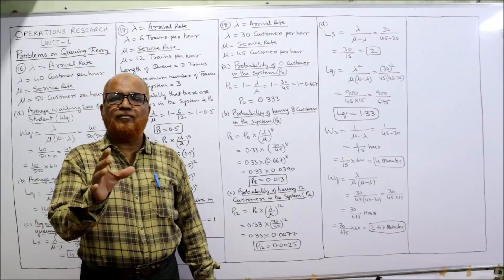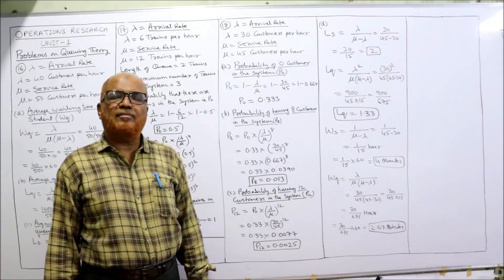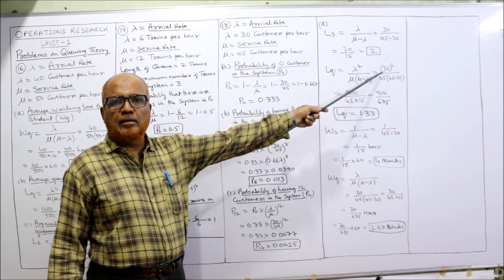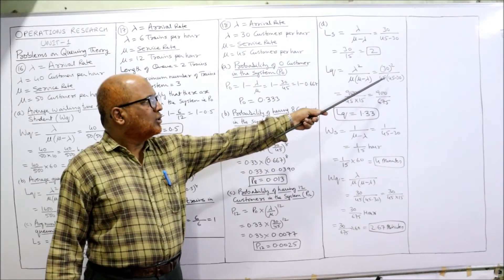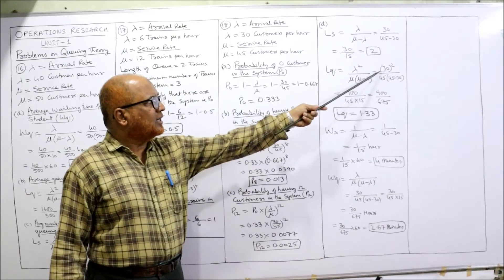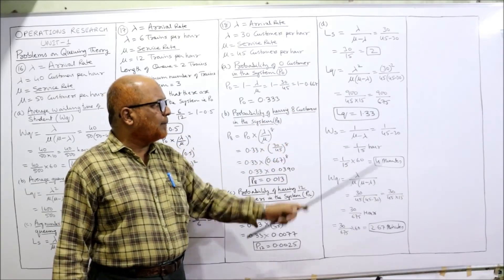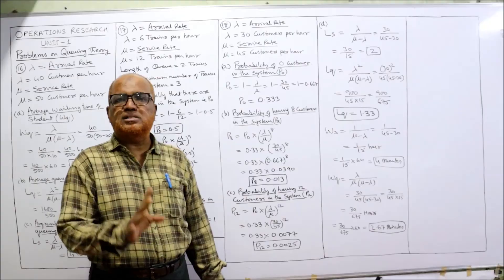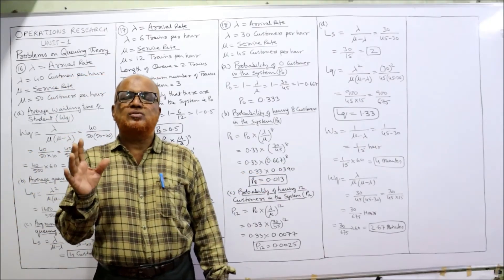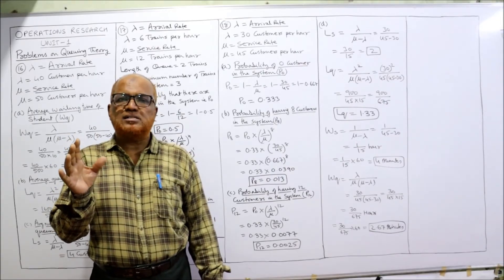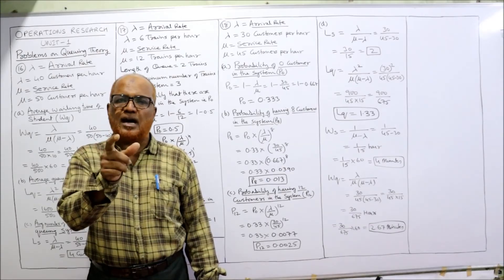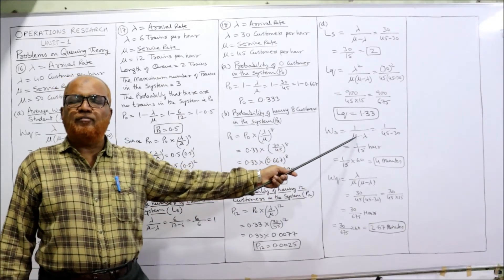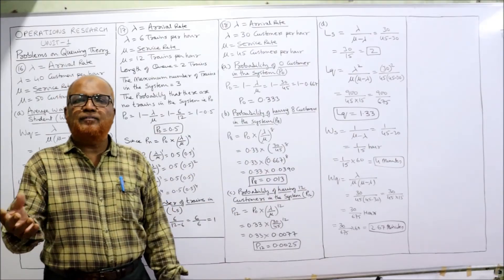LQ — average number of customers in the queue. Formula: LQ = λ² divided by μ times (μ minus λ) = 30² divided by 45 times (45 minus 30) = 900 divided by 675 = 1.33 customers in the queue. So 2 customers in the whole system and 1.33 in the queue. WS — average waiting time of a customer in the whole system. WS = 1 divided by (μ minus λ) = 1 divided by (45 minus 30) = 1/15 hours.